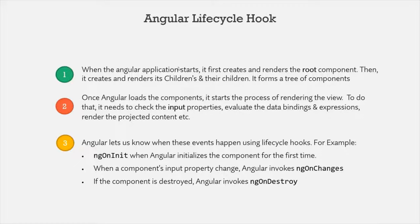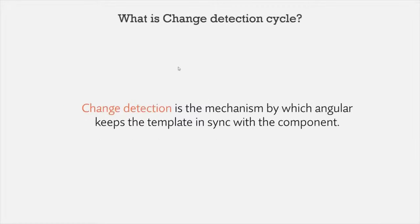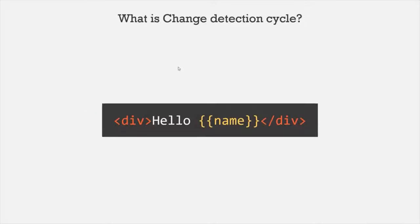Before diving into Lifecycle Hooks, we need to understand what is the Change Detection Cycle. Change Detection is the mechanism by which Angular keeps the template in sync with the component. For example, in the view template we have a div using the name property of the component class, and Angular will update the DOM every time the value of this name property changes.